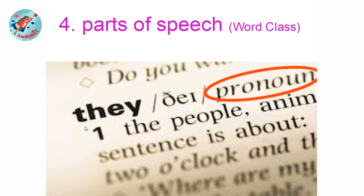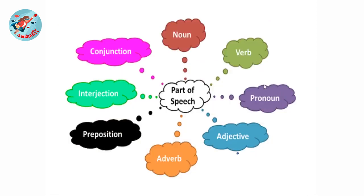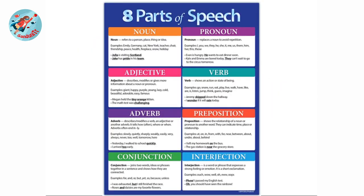Look at this example. Word classes include: pronoun, noun, verb, adjective, adverb, preposition, interjection — like 'oh', 'ouch', 'hi' — and conjunction. These are the Parts of Speech in English. When you look up a word in the dictionary page, you can find which word class or part of speech it belongs to.